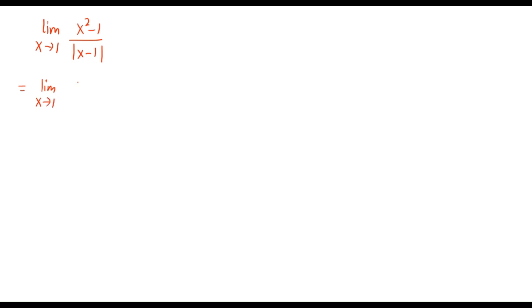So let's first simplify this algebraically. Factorize x squared minus 1 as (x minus 1) times (x plus 1), and the denominator is still the same.